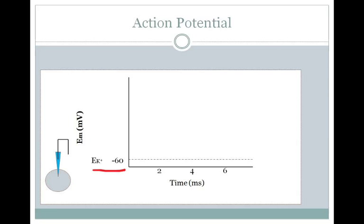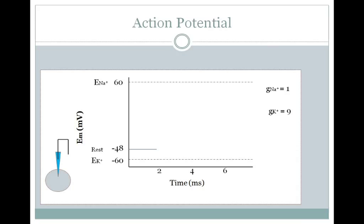If all you had were sodium channels, then the equilibrium potential of that cell would equal that of sodium, or positive 60. But as we found in the last lecture, with a relative conductance of potassium of 9 and sodium of 1 — so way more potassium channels than sodium channels — your membrane potential at rest is closer to that of the equilibrium potential of potassium, or around minus 48 millivolts.